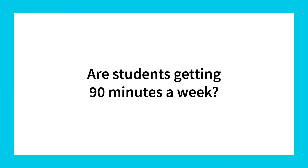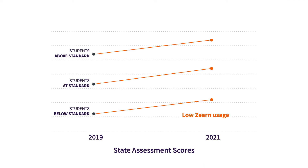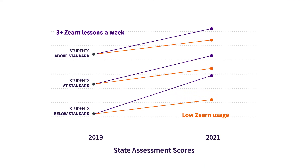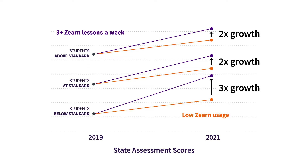Once teachers and students are signing in regularly, the next data point to look for is that students are learning on Zearn for at least 90 minutes a week. Our recent research shows that students who completed three or more grade-level lessons a week on Zearn, which contain built-in, just-in-time supports, experience two to three times the growth of their peers. Each digital lesson usually takes about 30 minutes, which means students should get at least 90 minutes a week.